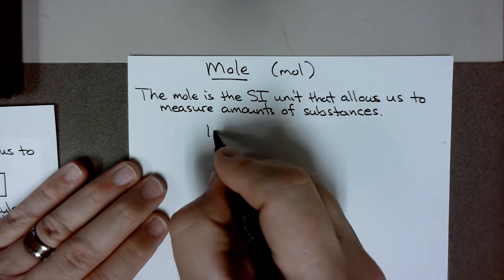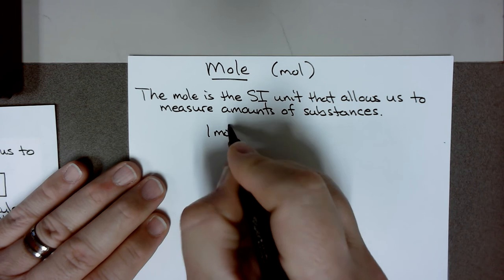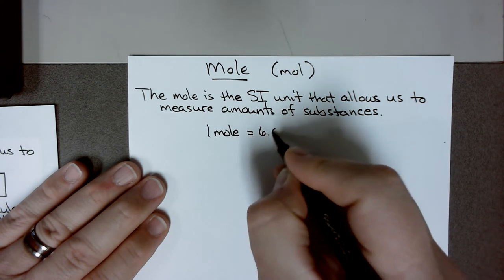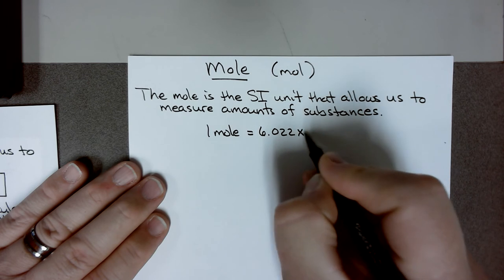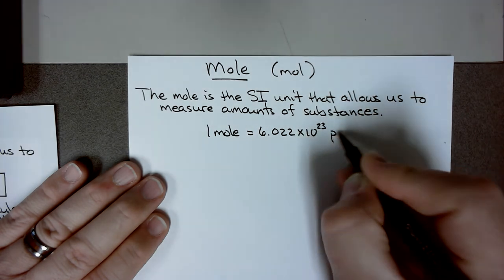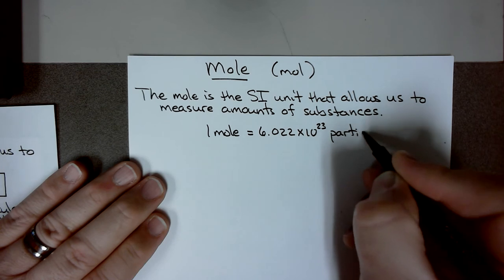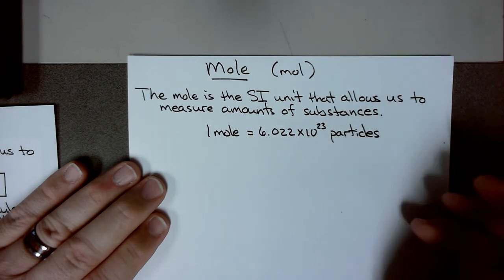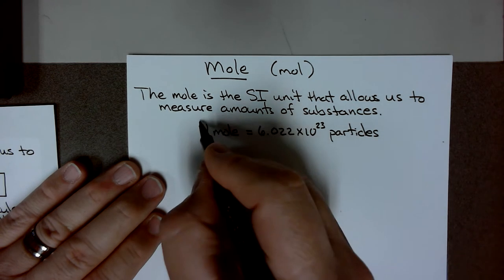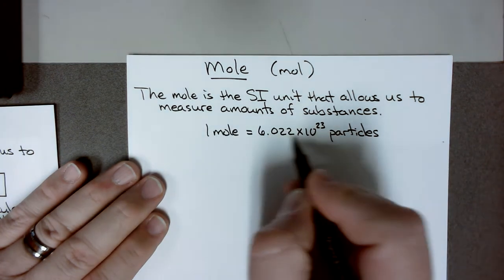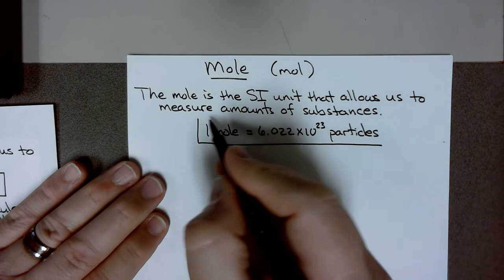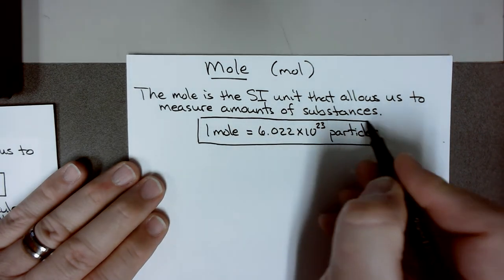One mole is equal to 6.022 times 10 to the 23rd particles. I say particles — it could be anything, it could be any item. But we're in chemistry, and because this is such a huge number, we're really going to look at particles. The number is so large that, for example,